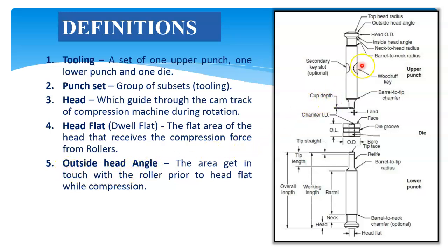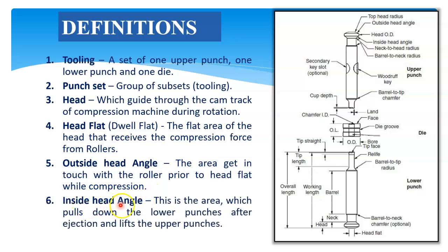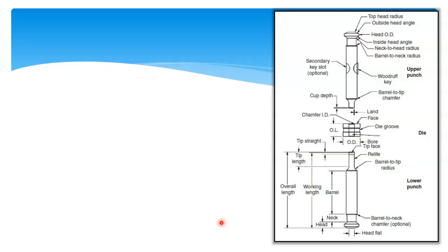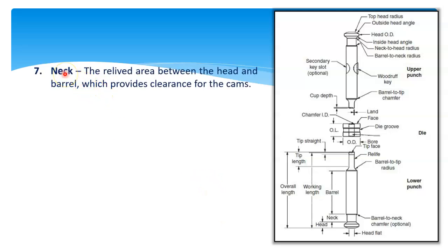Outside head angle: this is the outside head angle of upper punch and lower punch. This area gets in touch with the roller prior to the head flat while compression. Then inside head angle: this is the inside head angle of the punch. This is the area which pulls down the lower punches after ejection and lifts the upper punches.